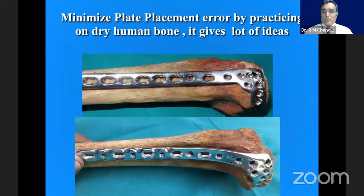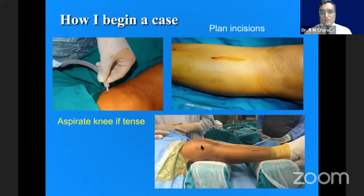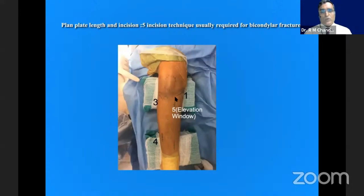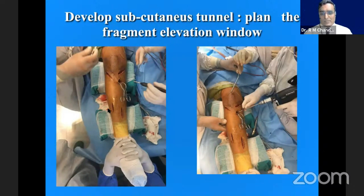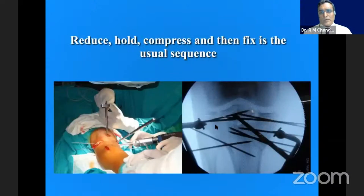Pay attention to the raft plate positioning — if it goes more posterior, the anterior end extends further anteriorly; if placed more anterior, it goes horizontally. A well-molded plate gives a good effect in holding these fragments. To begin a case: aspirate the knee with a 16-gauge needle if quite tense, to clear the hematoma that would otherwise flood the field. The phi incision technique involves a medial MIPO, a lateral MIPO for a bicondylar fracture, and a small fragment window for elevation. Subcutaneous tunnels are made, clamps hold the reduction, the articular plateau goes back into position, varus is reduced, and the raft plate is fixed.